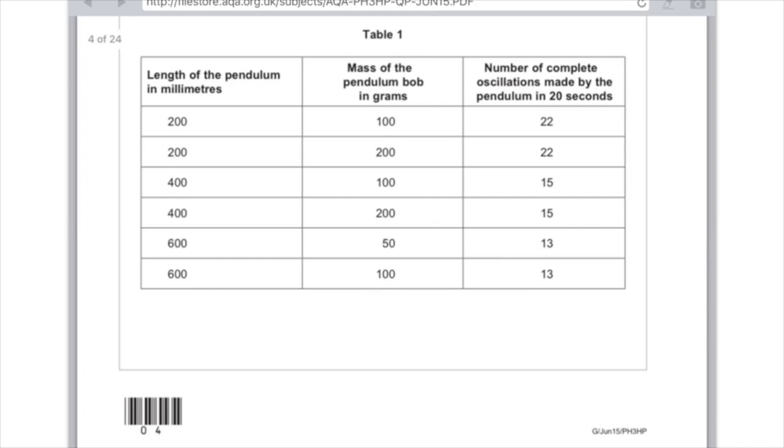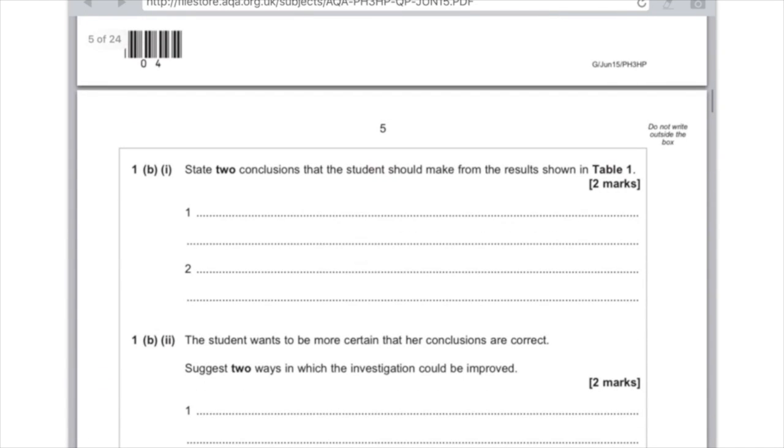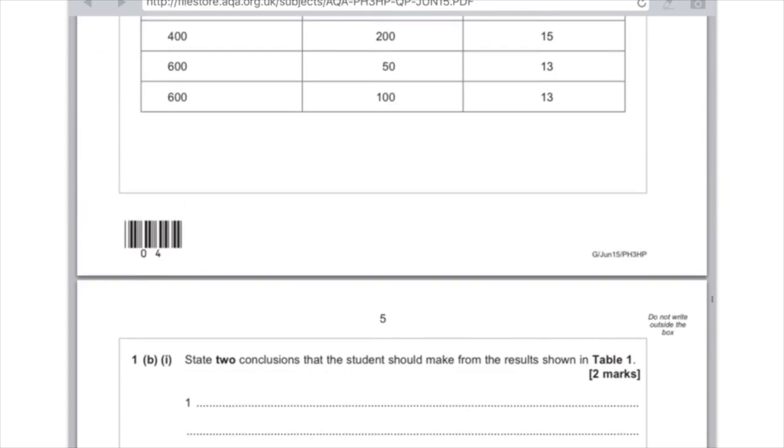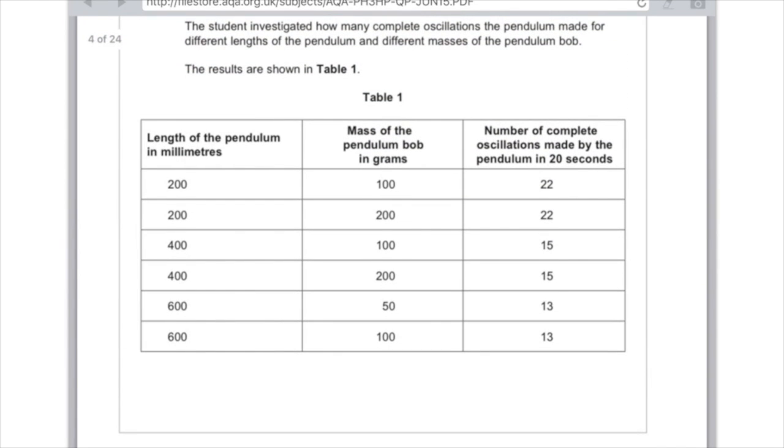Anyway, we've got length of pendulum in millimetres, mass of pendulum bob, and number of complete oscillations made by the pendulum in 20 seconds. 1b. State two conclusions that the student should make from the results shown in table 1. These are the easiest sorts of questions. Just pull out some information from the table and you'll get the answer right. So let's scan down.